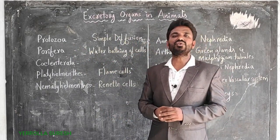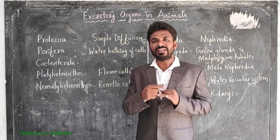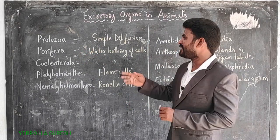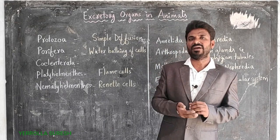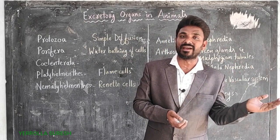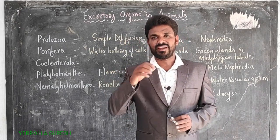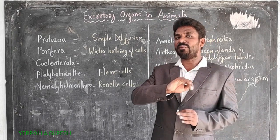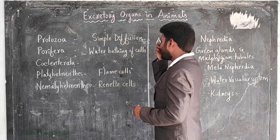First, Protozoa — the group in which all unicellular organisms are present. Organisms like Amoeba, Paramecium, and Euglena come under Protozoa. Excretion in Protozoa takes place by simple diffusion. Diffusion is the movement of molecules from a high concentration area to a low concentration area. During metabolism, waste materials form inside the cell, their concentration increases, and they move outward from higher to lower concentration.